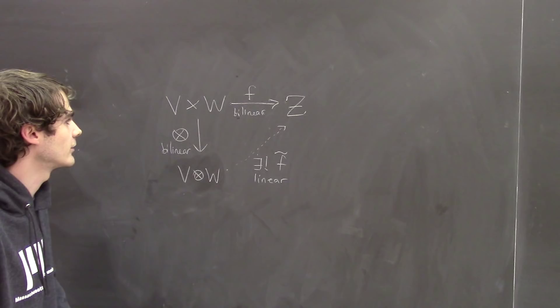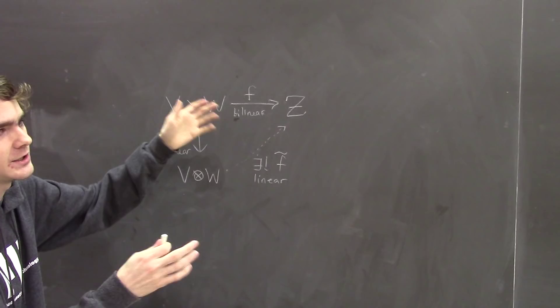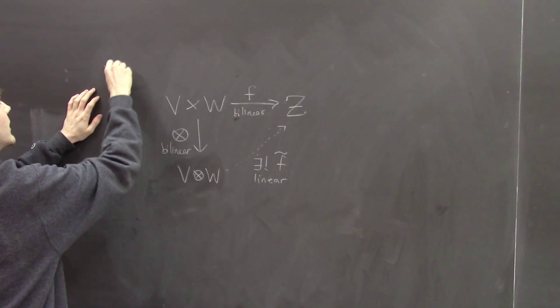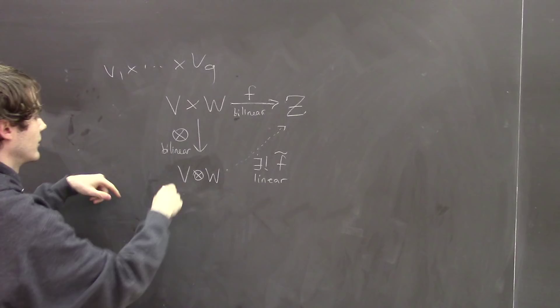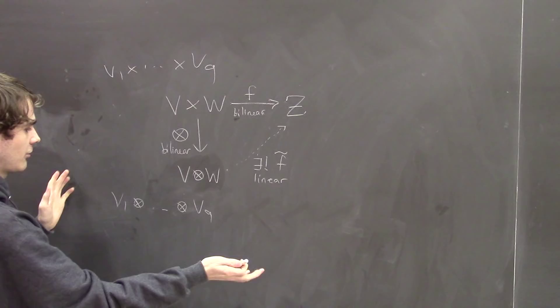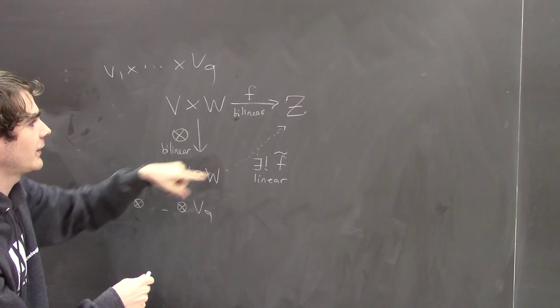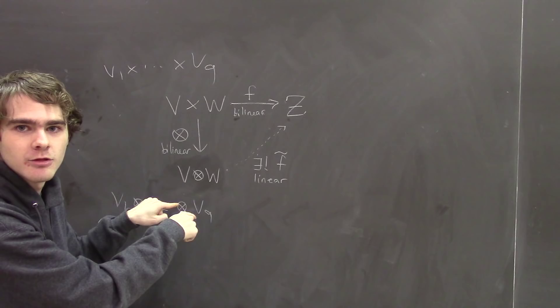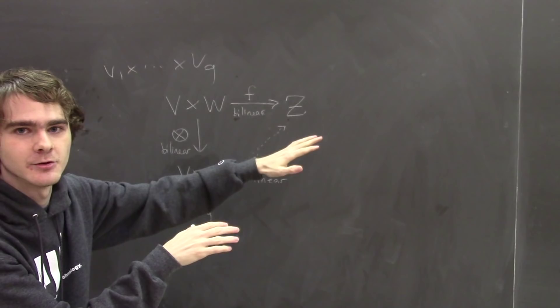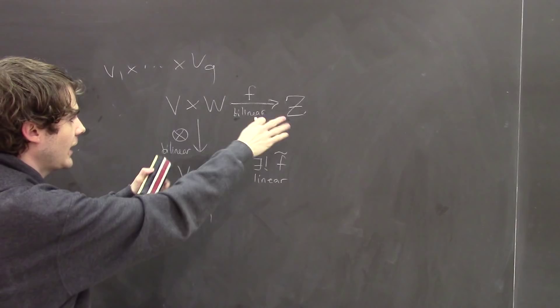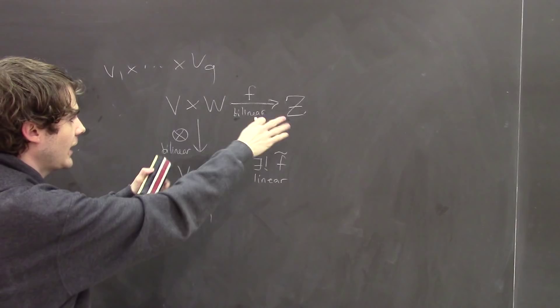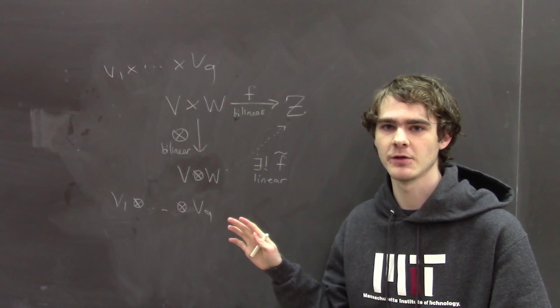In general you can give me any number of vector spaces — say nine — and look at nine-linear maps from a giant product of nine vector spaces into Z. There's another space V₁ ⊗ … ⊗ V₉ that linearizes those nine-linear maps. Notice that Z can be anything — there's only one tensor product and it works for all multilinear maps no matter where they map you. This diagram is called the universal property of the tensor product, and if there's one thing you should remember about tensor products, it's this.